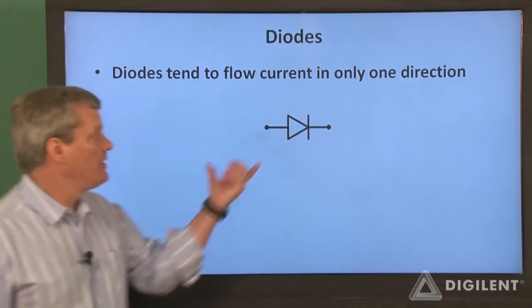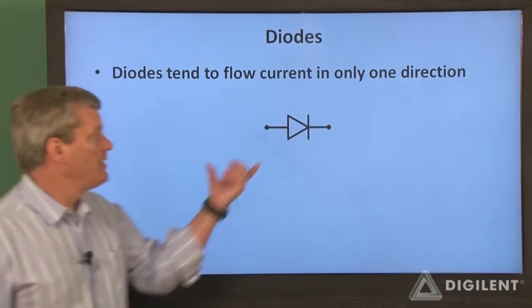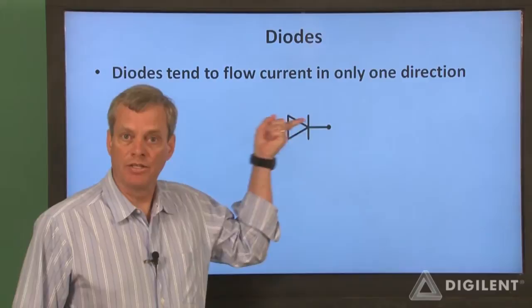The simplest way to think about diodes is that they tend to allow current to flow in only one direction. This is the circuit symbol for a diode. It looks a little like an arrow. The arrow is pointing in the direction that current wants to flow.